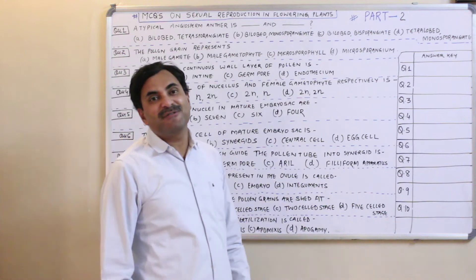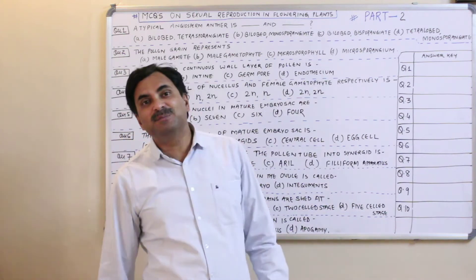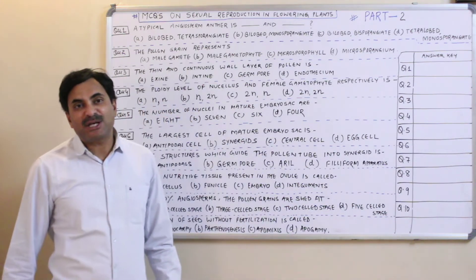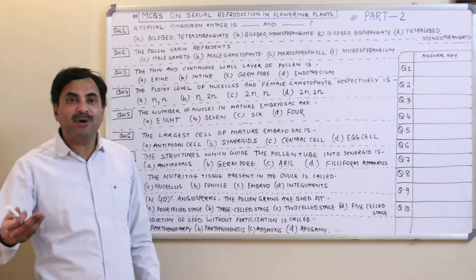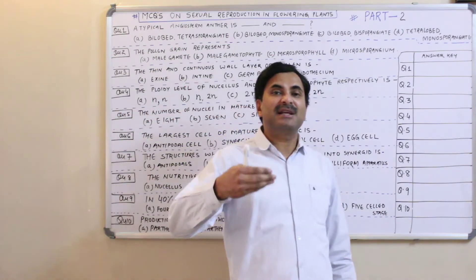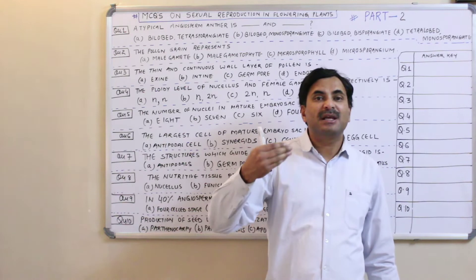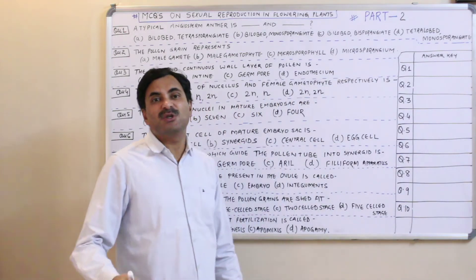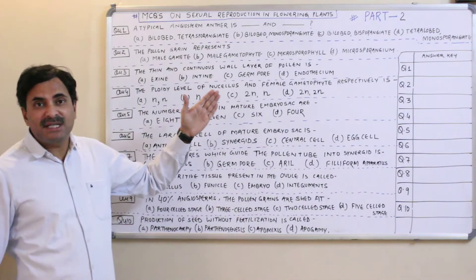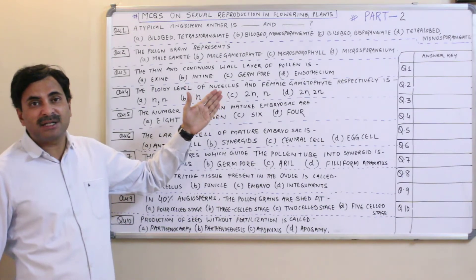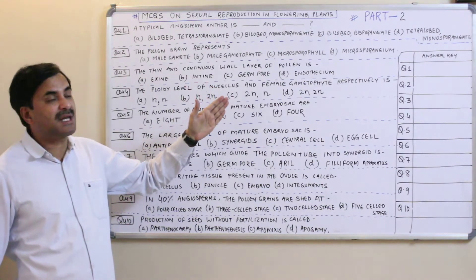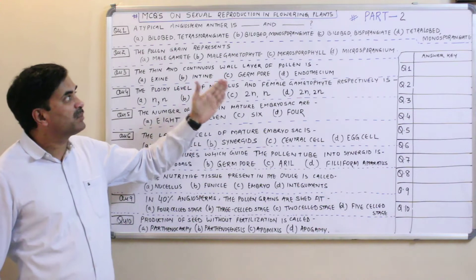Hello to all. Today we will discuss some MCQs which are based on sexual reproduction in flowering plants, or the questions are related to the life cycle of the angiosperms. Every year in the NEET examination, at least one to two questions — minimum two questions — are asked from this chapter, and hence it is very very important.